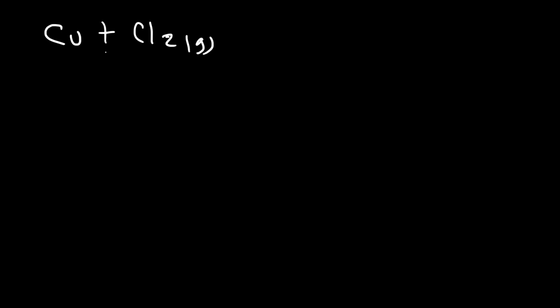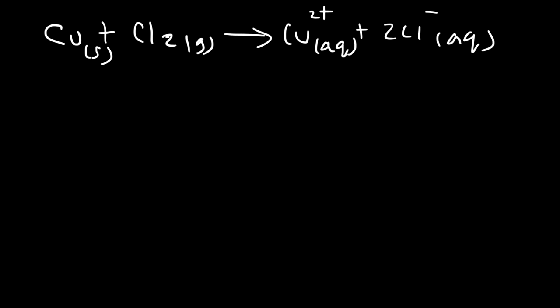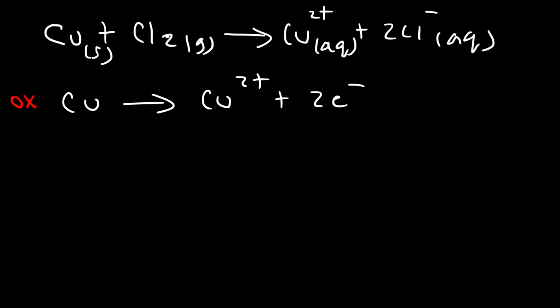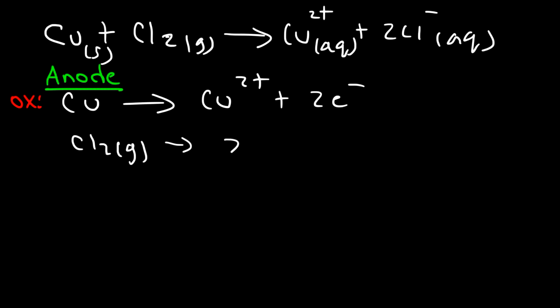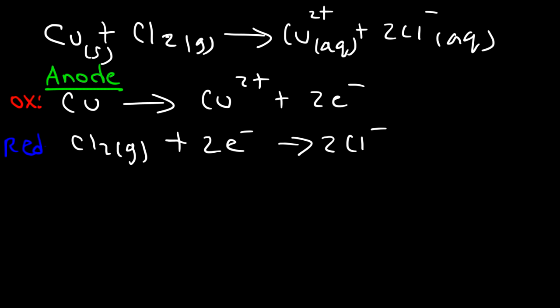Here is another example: copper metal reacts with chlorine gas to produce Cu²⁺ dissolved in solution and chloride ion. Separating into half reactions: the oxidation reaction has electrons on the right side, so copper is the anode. Chlorine is being reduced to chloride ion, acquiring two electrons to achieve a negative charge. This is the reduction reaction associated with the cathode, but there is no solid in this reaction.